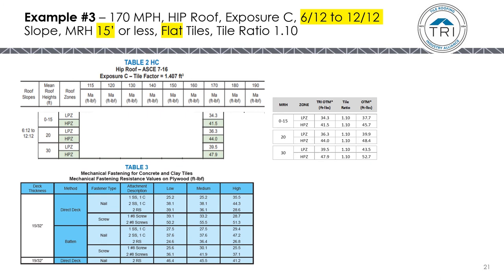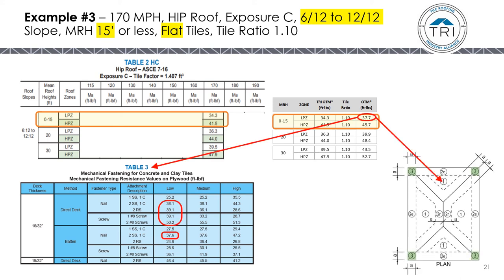In example three, we look at a steep roof, 6:12 to 12:12, at a mean roof height of 15 feet, flat tiles only. We go to Table 2HC and get our uplift moments — now the LPZ and HPZ are different. We factor in the tile ratio and look at the LPZ: Table 3 shows the mechanically fastening options for flat tile. In the HPZ, you are limited to just one fastening method — two screws — on low-profile tile at 170 mph.